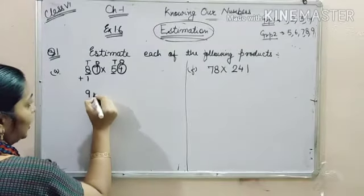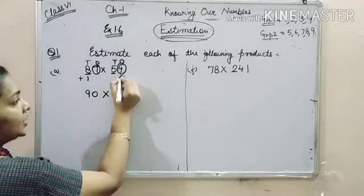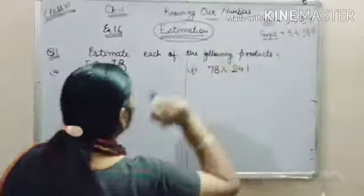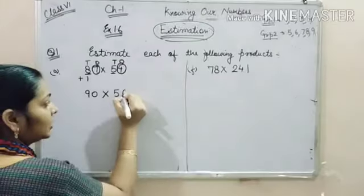It will become 90. Now here it is 4 which belongs to group 1. That means no change, it will be 50.